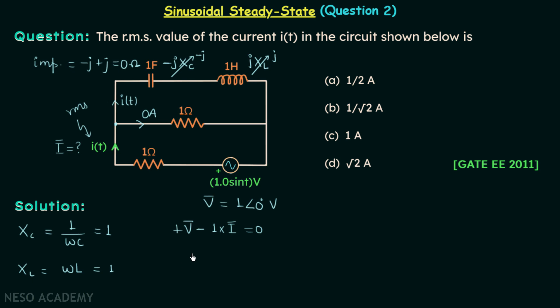From here we can say that i phasor is equal to v phasor, and v phasor is 1 angle 0 degree. So i phasor corresponding to the maximum value is equal to 1 angle 0 degree.